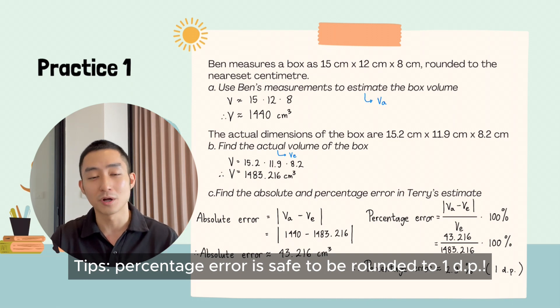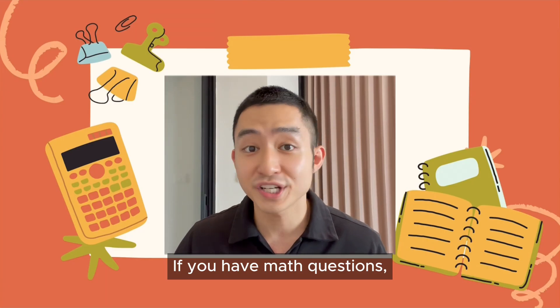Percentage error is safe to be rounded to 1 decimal place. If you have math questions, feel free to send me.